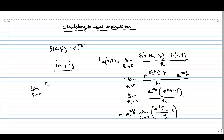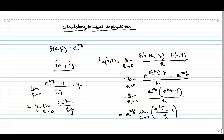We need to evaluate the limit as h tends to 0 of [e^(hy) minus 1] divided by h. This is a function of h, so we can treat y as a constant. We multiply y in both the numerator and denominator, and take y outside since it is independent of h. From single-variable calculus, we know that the limit as h tends to 0 of [e^(hy) minus 1] divided by (hy) equals 1. So the limit we get here is y.